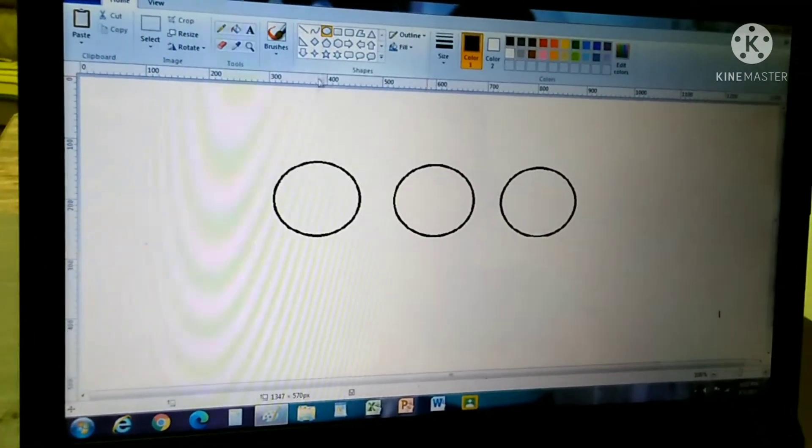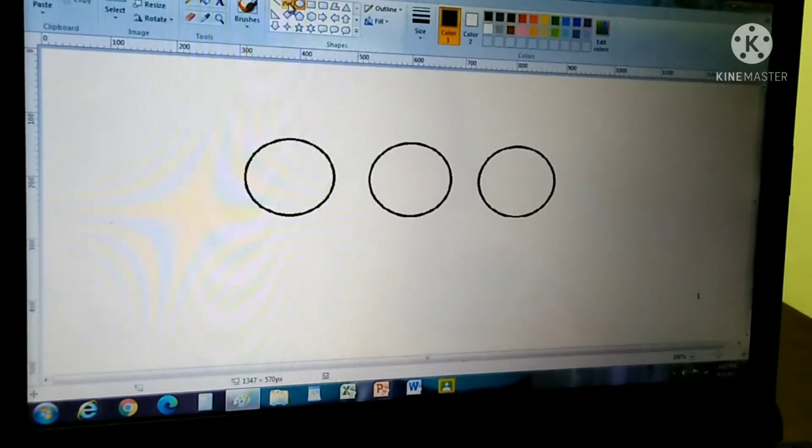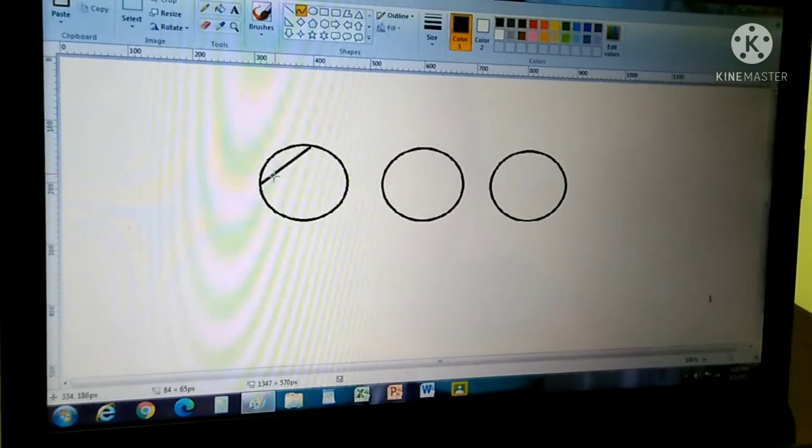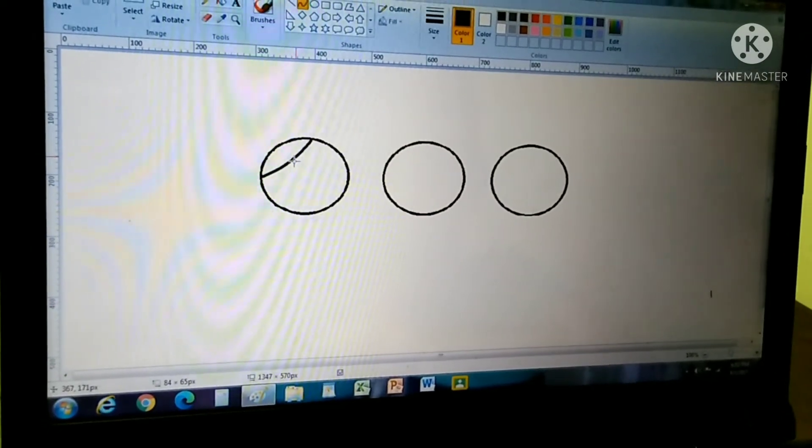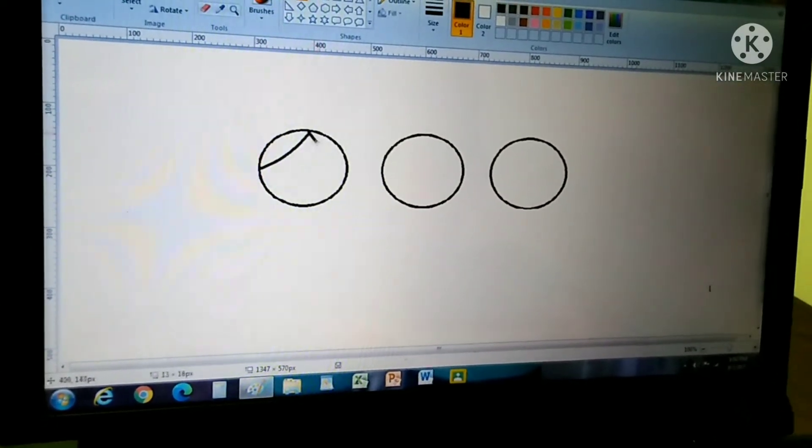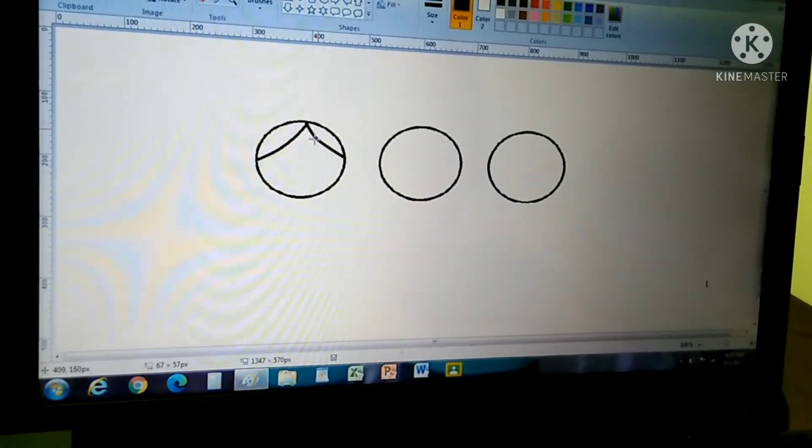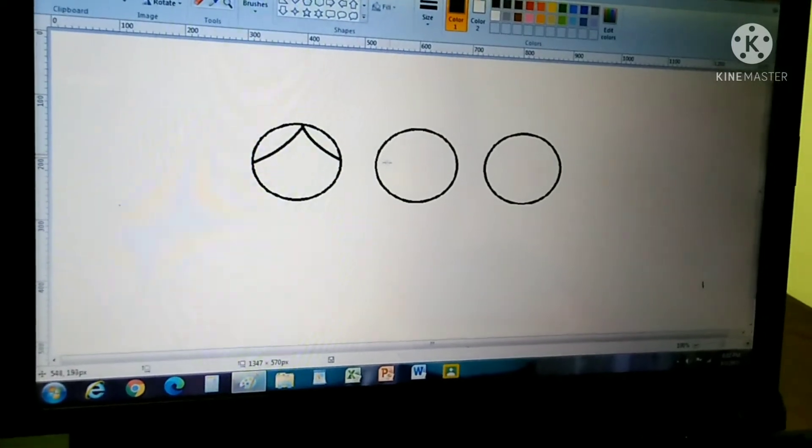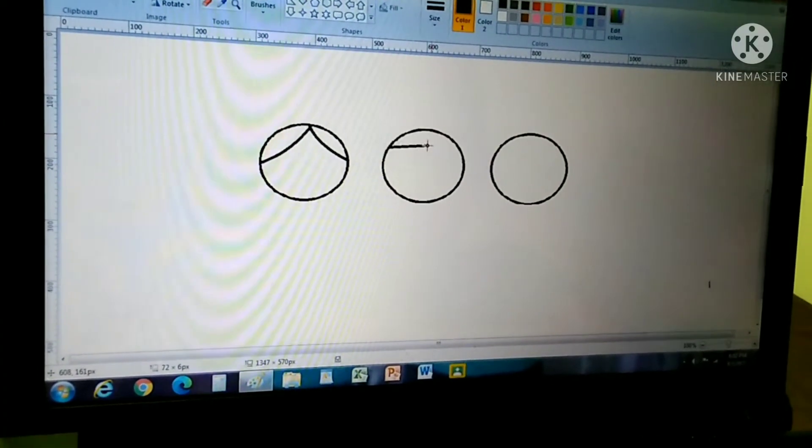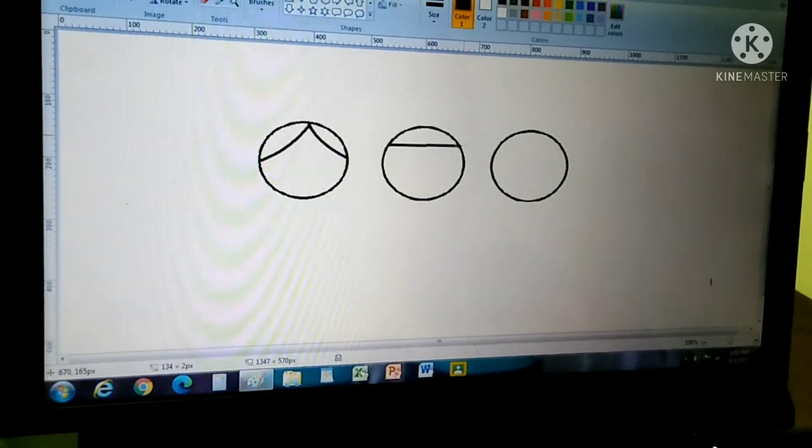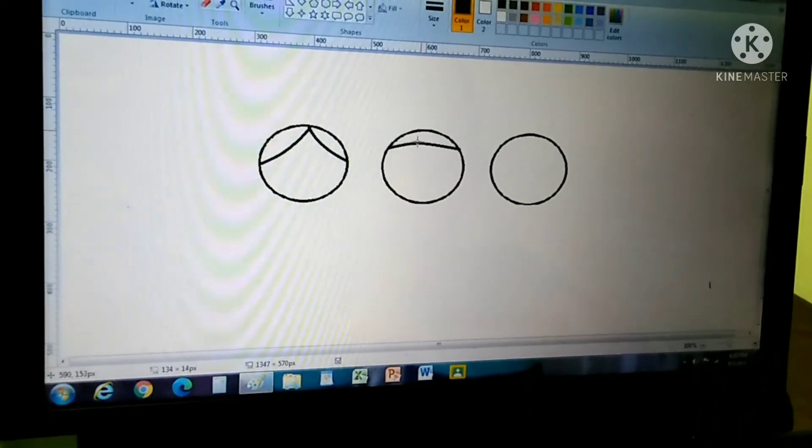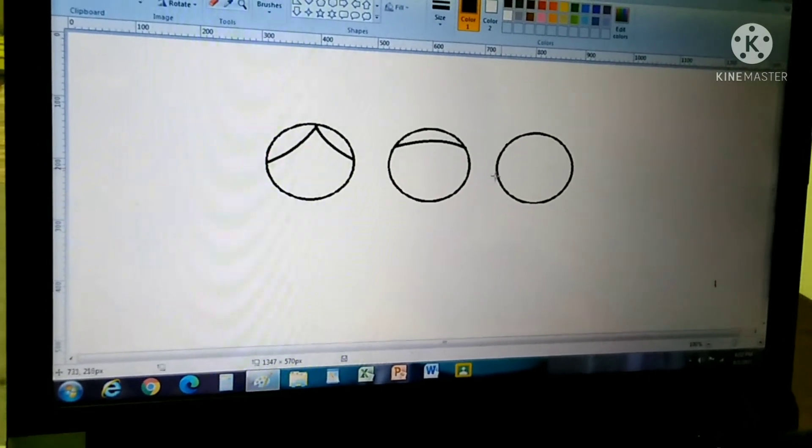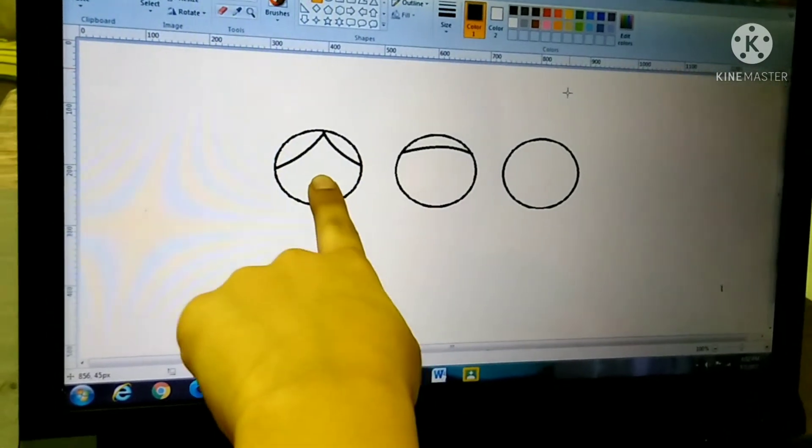Now take curve and put one here. And one more here. Now take the curve line. Put a straight line and do like this. And for the last you did like this same now.